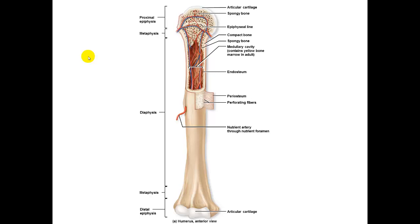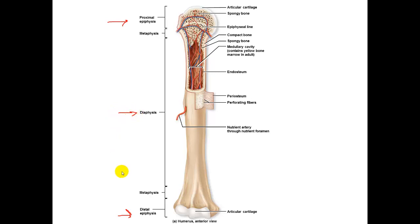Here is a figure of a long bone and we are going to look at the different parts. The first idea is that you are breaking this long bone up into different regions. On the ends of the bones we have the epiphyses, the shaft of the bone is the diaphysis, and in between the two on either end is the metaphysis.